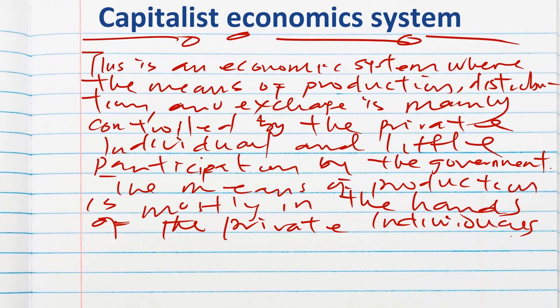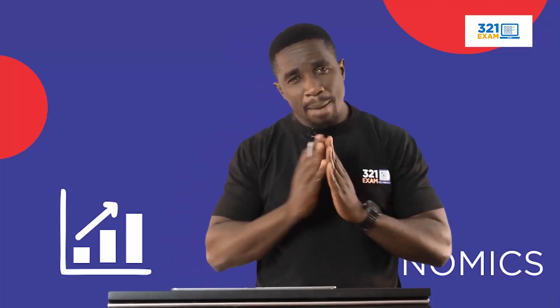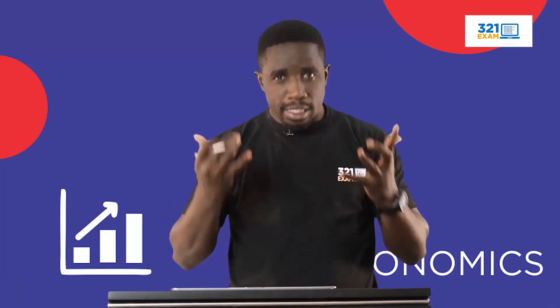The capitalist economic system is an economic system whereby the means of production and distribution is majorly in the hands of private individuals, while the government does little participation in the economic affairs of the state.